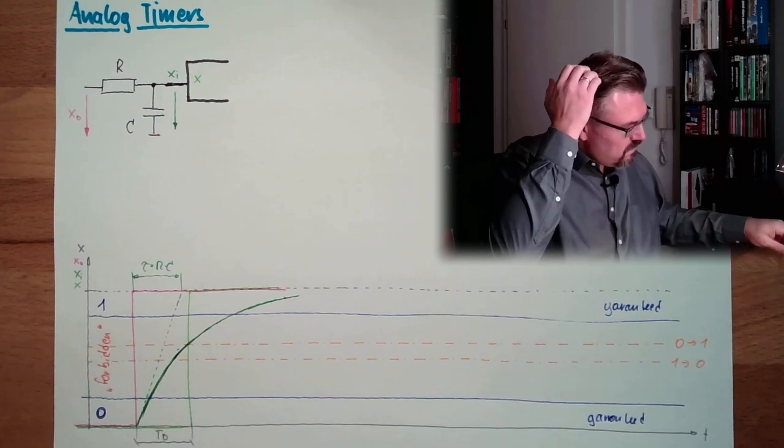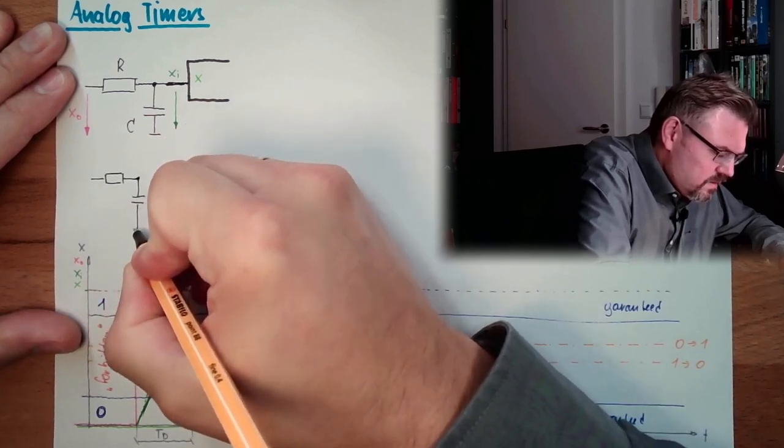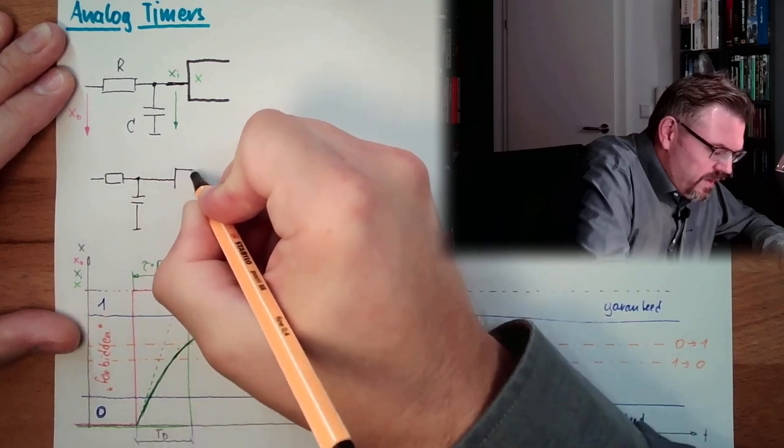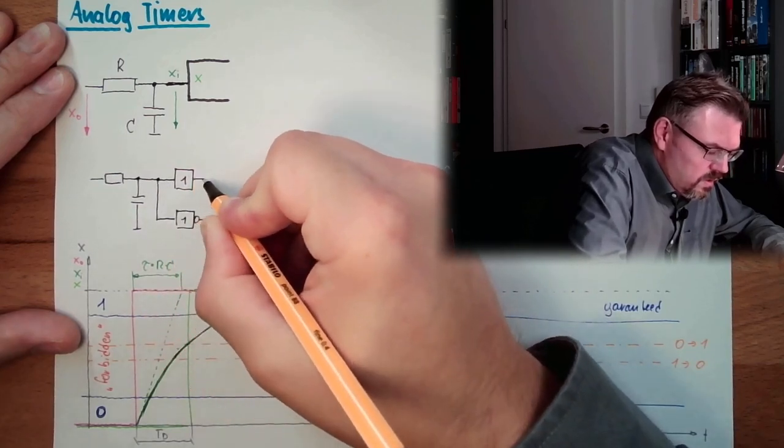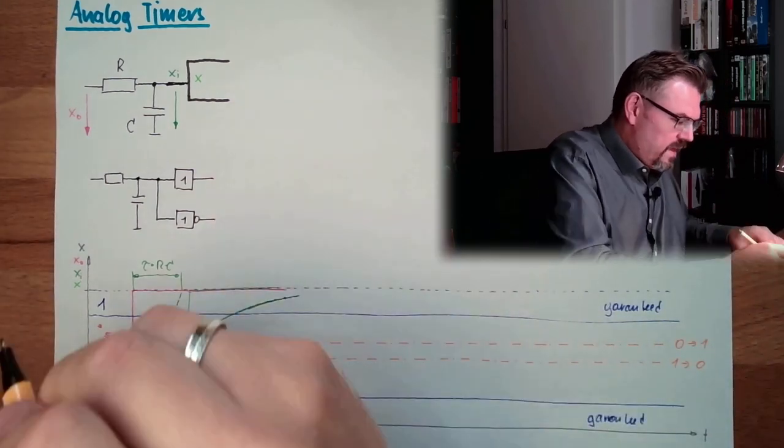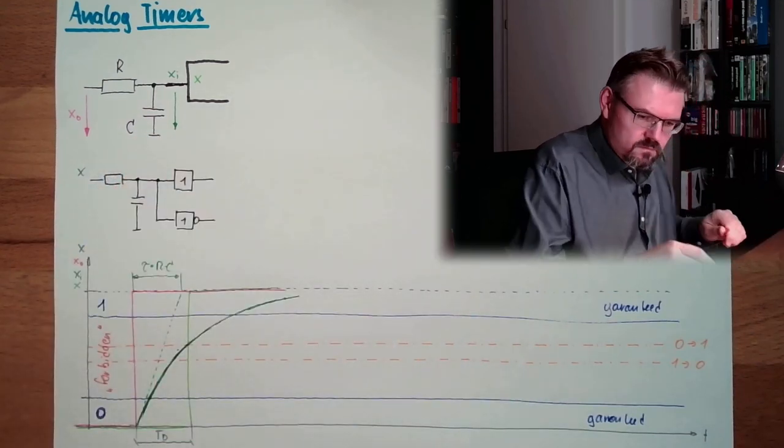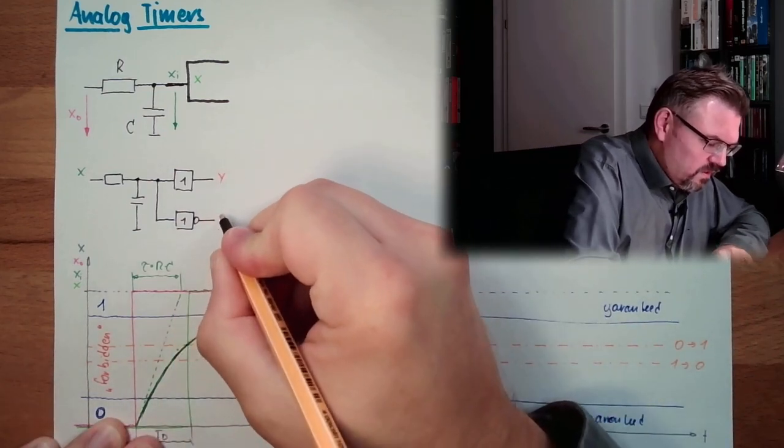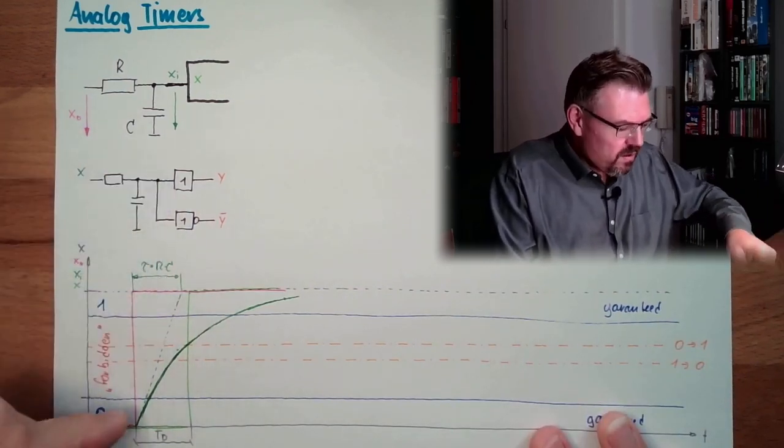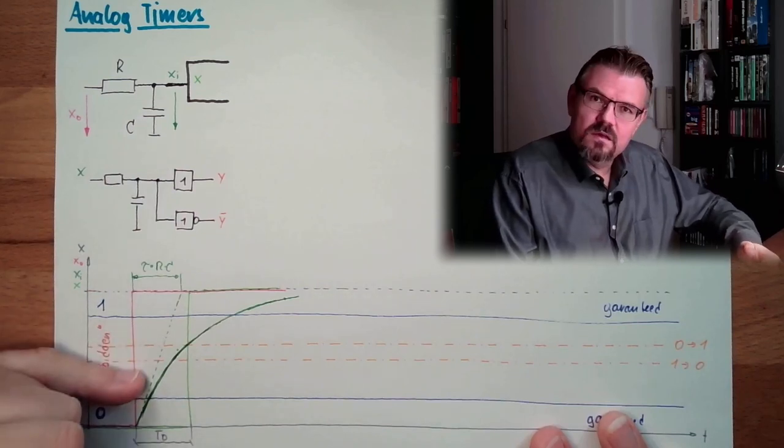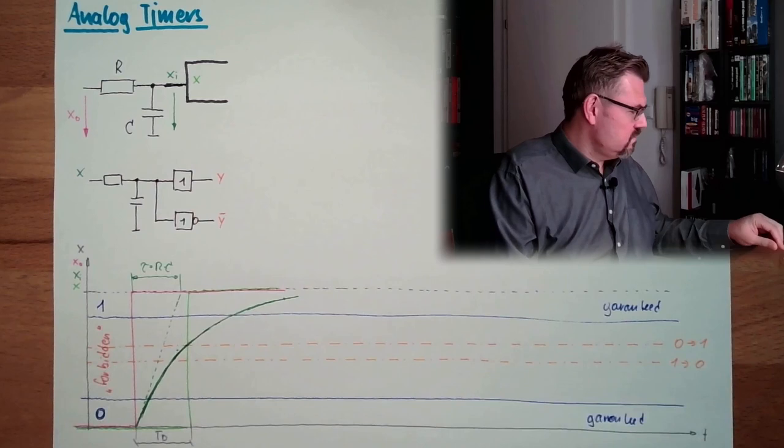Imagine, imagine you would have something like this. That we have here this RC element, and then we have one element with one, and then we have one element not one, yeah? And we would expect, if we have here X, and here Y, that this is not Y. However, it's not true in every circumstance, because it's two different elements, and one might have a trigger level here, and the other has a trigger level here. Not good, not good, yeah? Not good.